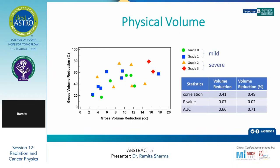This data compares the absolute volume reduction with the relative volume reduction of the physical volume of the parotid glands. It shows Xerostomia stages with grade 0, 1, 2, and 3, where grades 0 and 1 are considered mild, and grades 2 and 3 are considered severe.